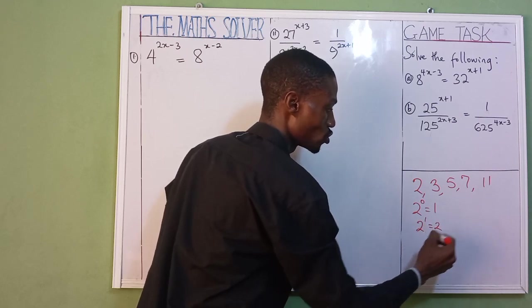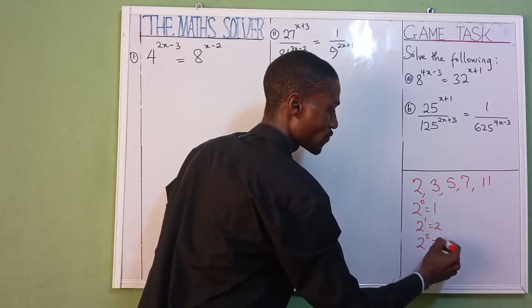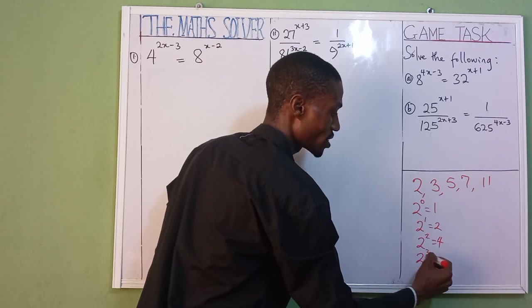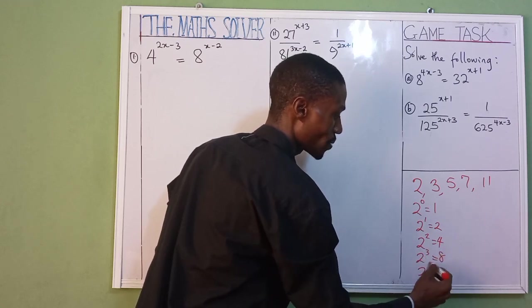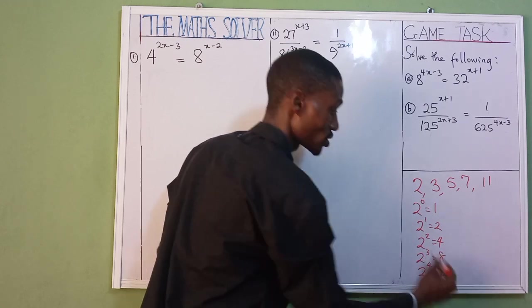2 to the power of 3 is 8. 2 to the power of 4 is 16, and so on.